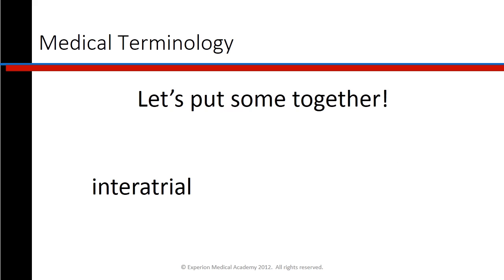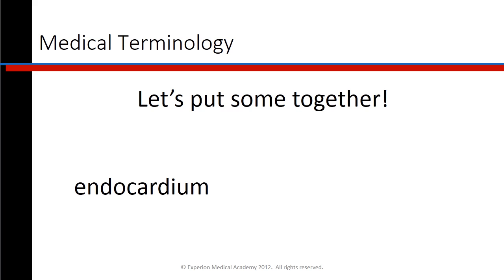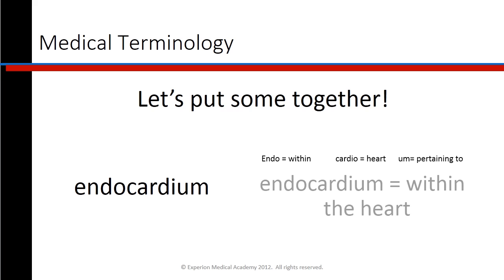Let's put some together. Interatrial: Inter means between, and atrial means upper chambers, so interatrial means between the upper chambers of the heart. Endocardium: Endo means within, cardio means heart, um means pertaining to — so endocardium means pertaining to within the heart.